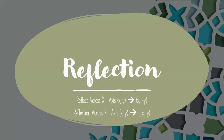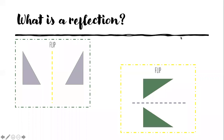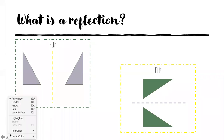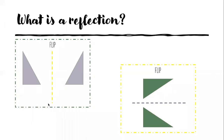So reflection is going to be either across the x-axis or across the y-axis. A lot of this doesn't require complex math — it's really just memorization, and this is where we're getting to that part. The first thing we need to know is that a reflection is a flip.